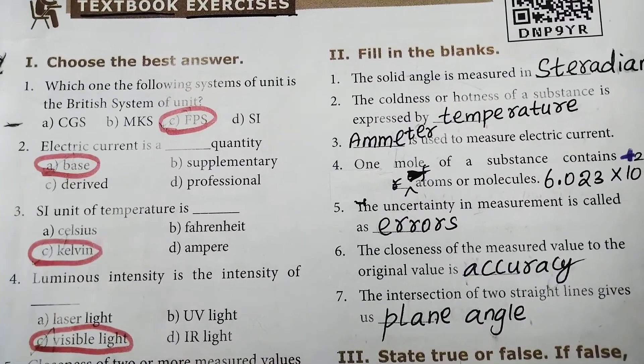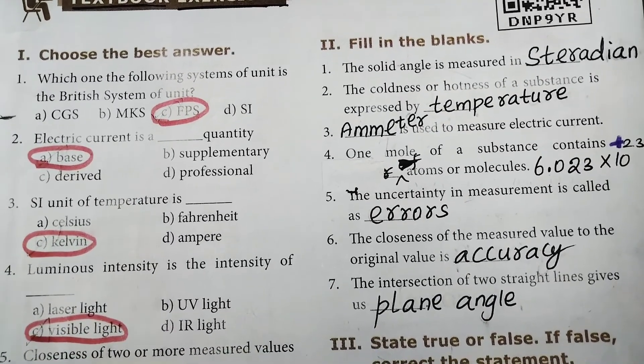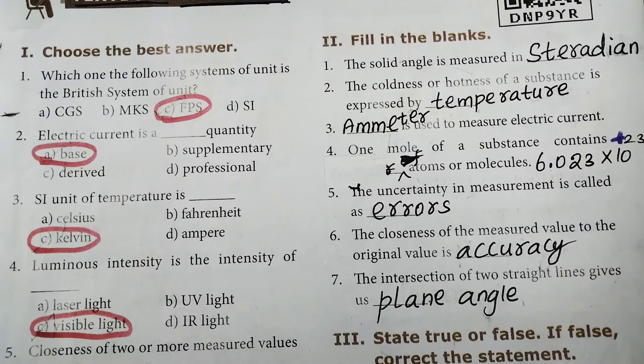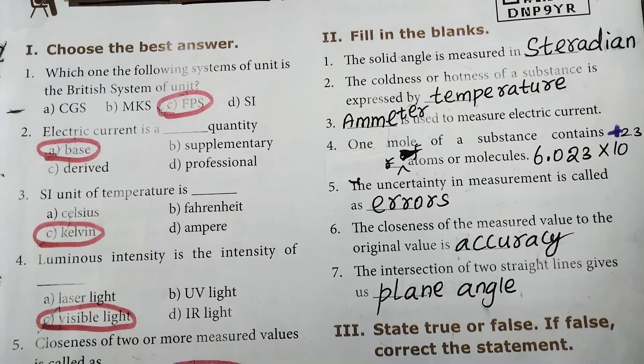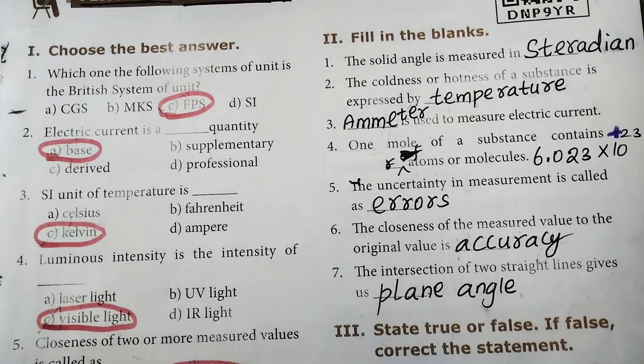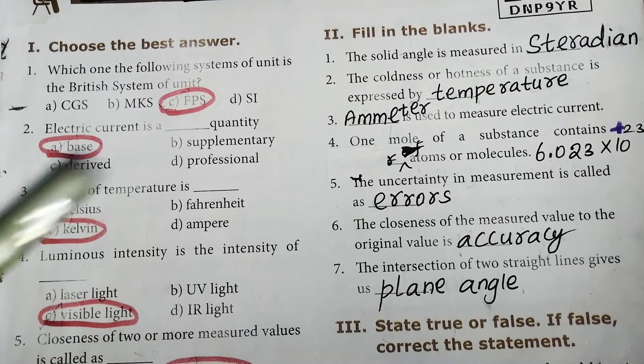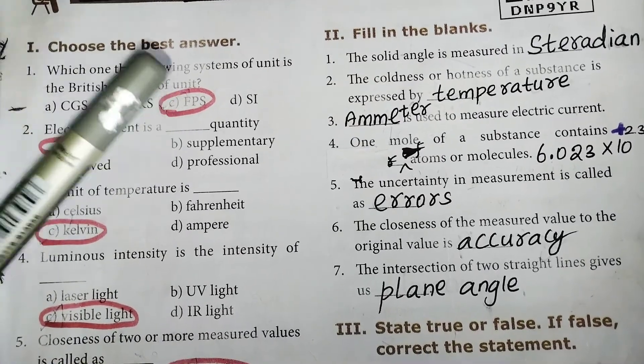First one, choose the best answer. This is 2020 syllabus, new syllabus. First one, choose the best answer. Which one of the following system of unit is the British system of unit? C, FPS.